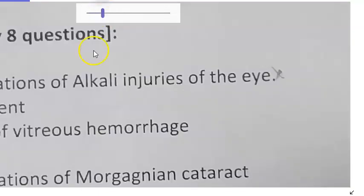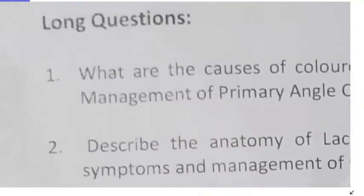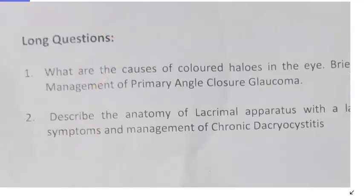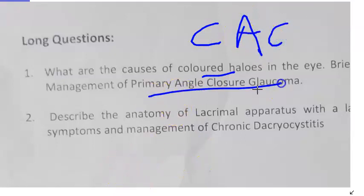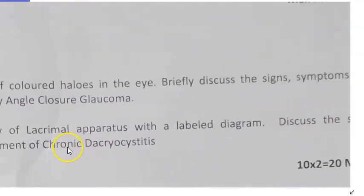Hello, let's look at some ophthalmology question papers. Starting with the long answer questions — causes of colored halos. Basically you can have corneal edema, acute congestive glaucoma, and cataract.